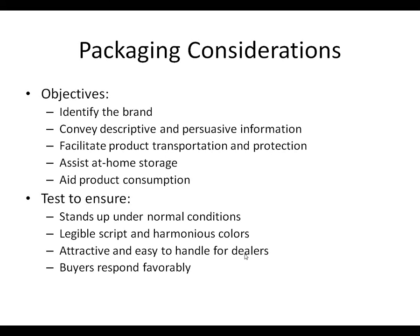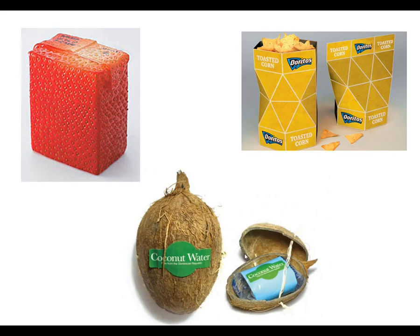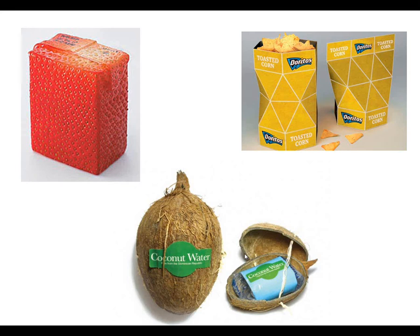When considering packaging options, you've got to test to make sure it's both eye-appealing and won't fall apart. Here are some creative examples. On the top left, strawberry juice packaging that illustrates what's inside, is eye-appealing, and has a spout you can drink right from. On the top right, Doritos toasted corn comes in a little box you pop open and it becomes a serving tray. Finally, coconut water comes in a little coconut shell — very attractive and eye-appealing, catching attention and helping sell the product while also protecting it.